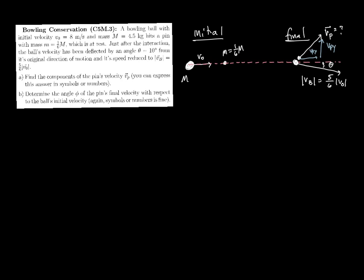So how are we going to approach this? This is a typical conservation of momentum case. The system consists of two objects — one of mass M and one of mass little m — they interact and transfer some momentum, but delta p equals zero. That splits into two equations: delta p in the x direction is zero, and delta p in the y direction is zero. I'll assume I need both and work from there.